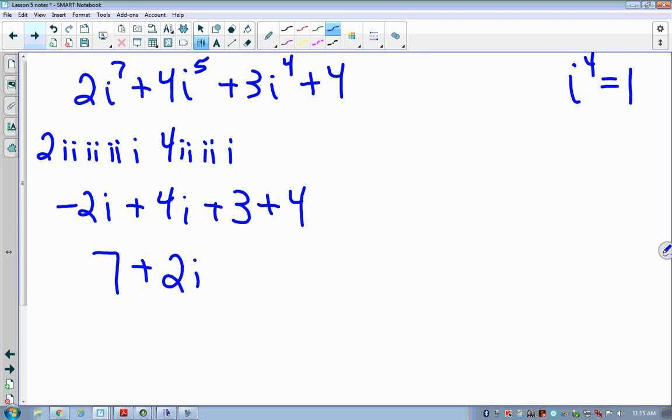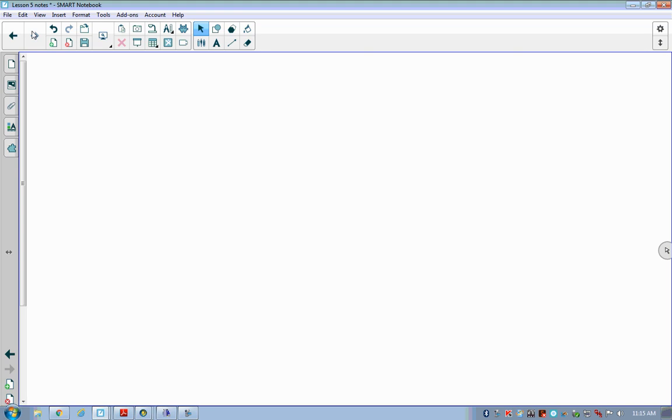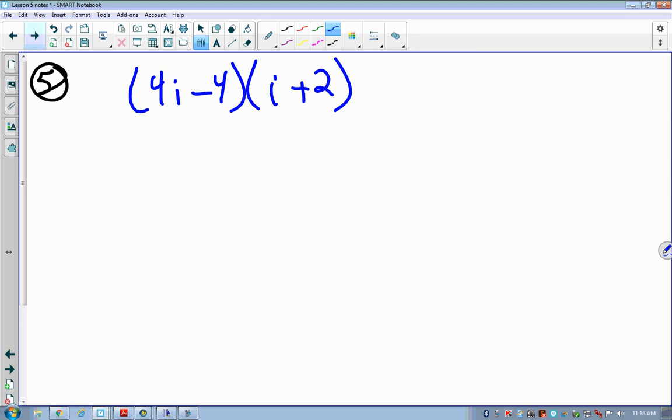Was that easier than we thought it was going to be? That was question number 4. I've got 10 minutes. I will probably use all of our time. Because I think you guys need to see as many of these as you can. Let's see. What is this? 5. We have 4i minus 4 times i plus 2. What does this look like we would do? Foil. Foil. And that's what we're going to do.